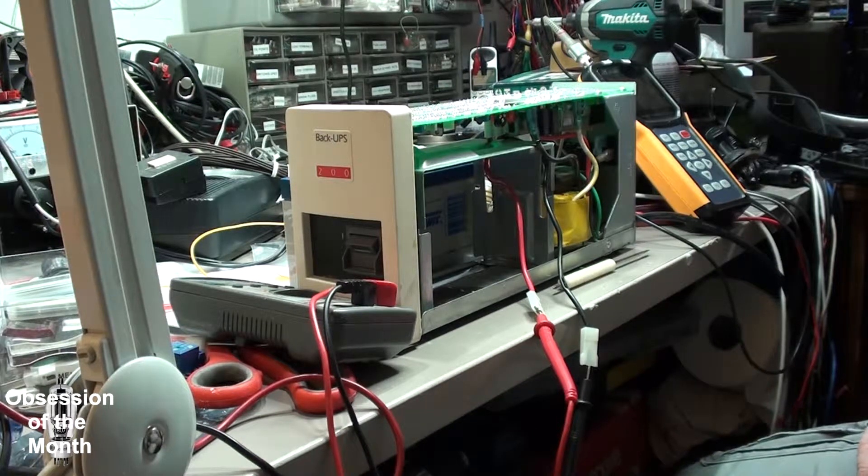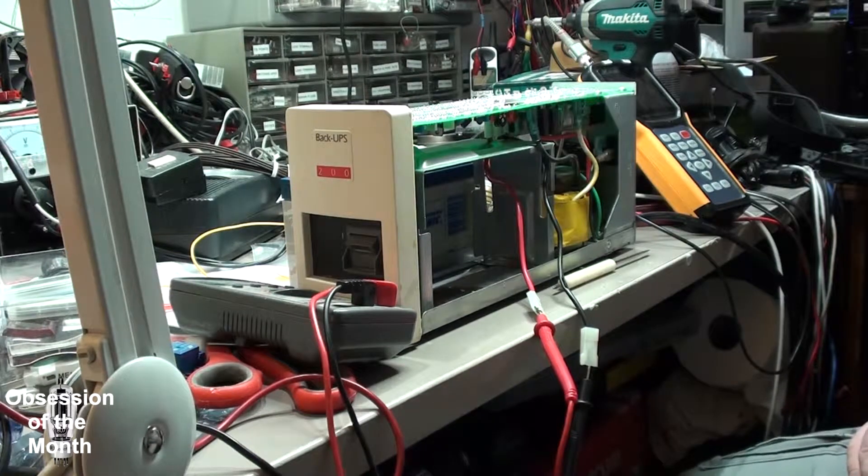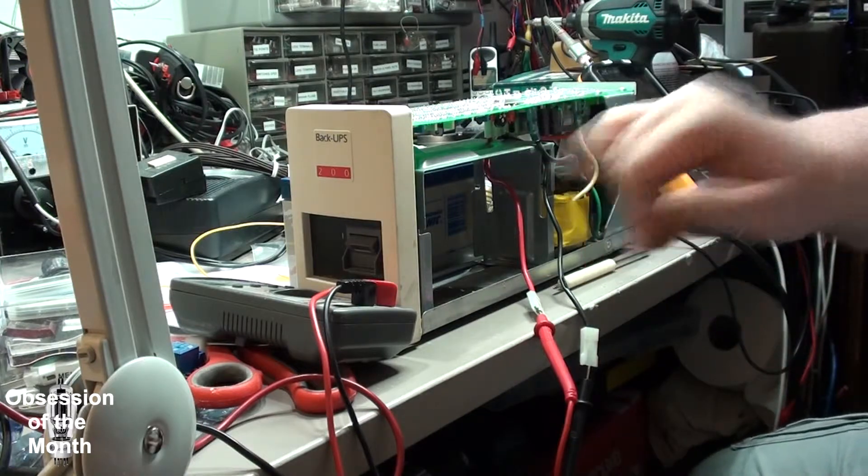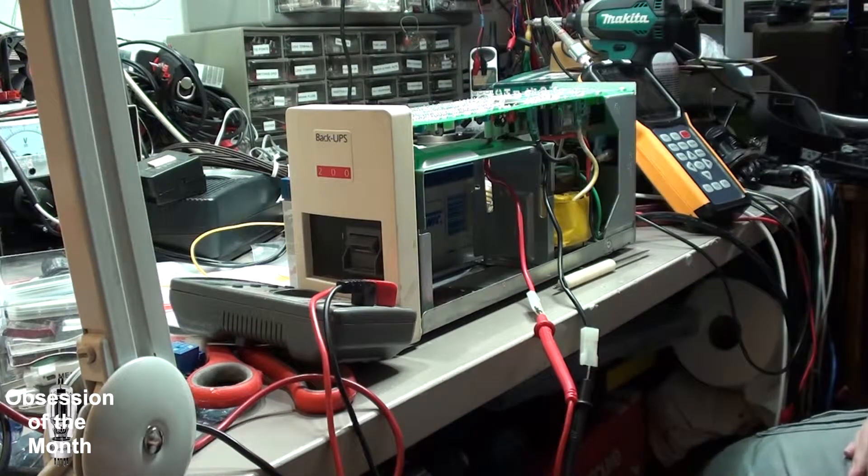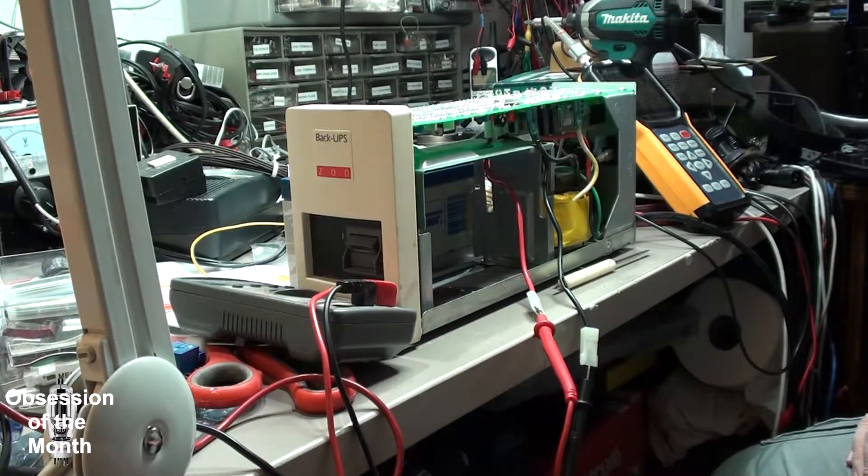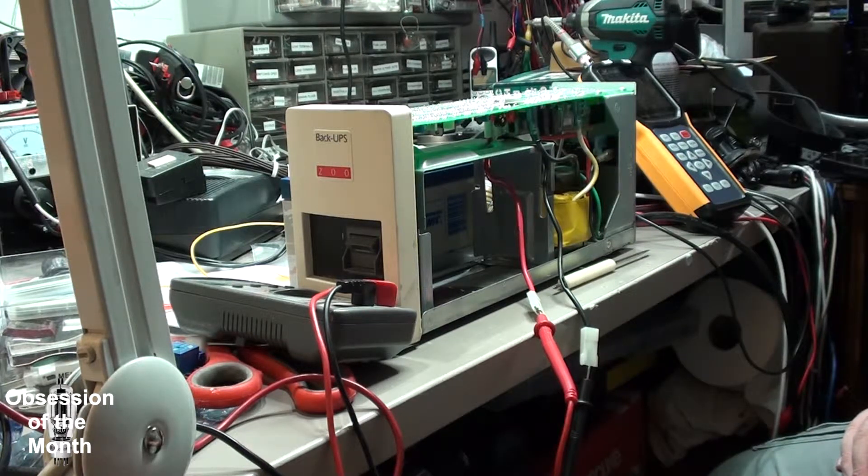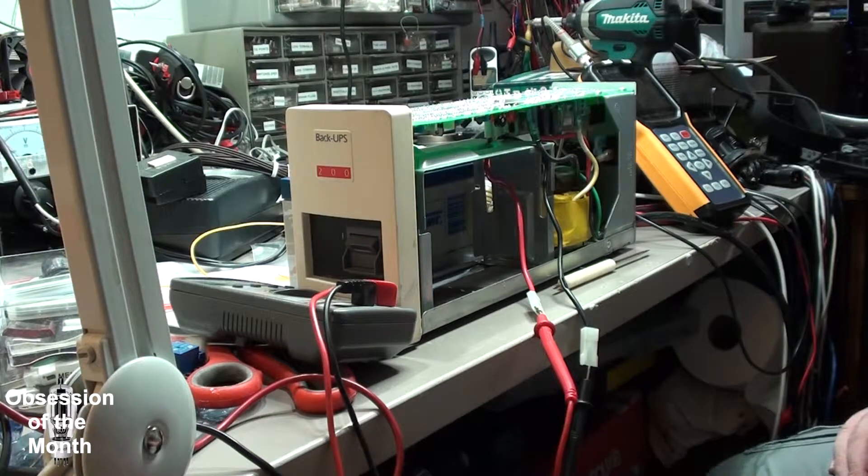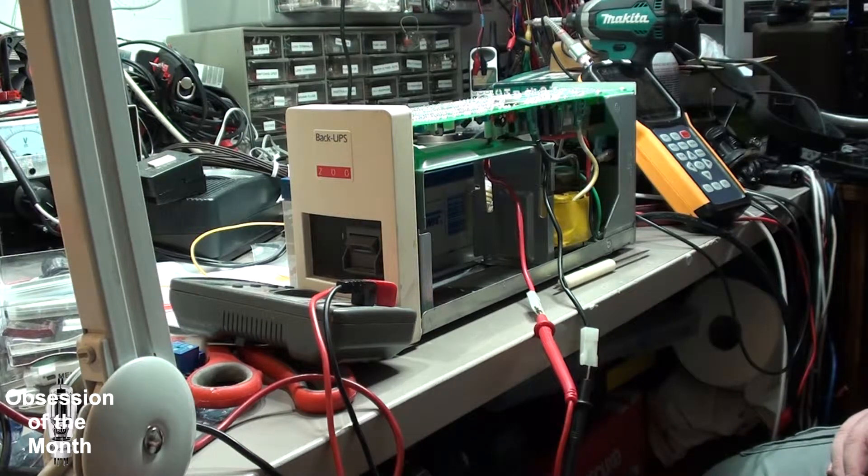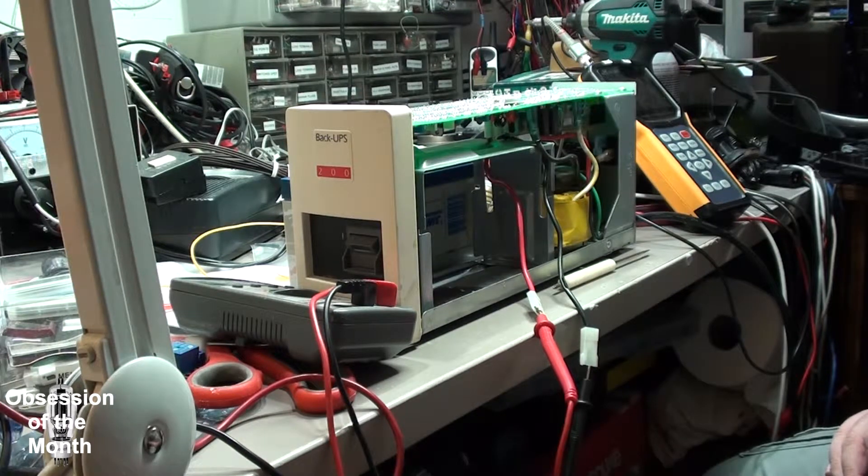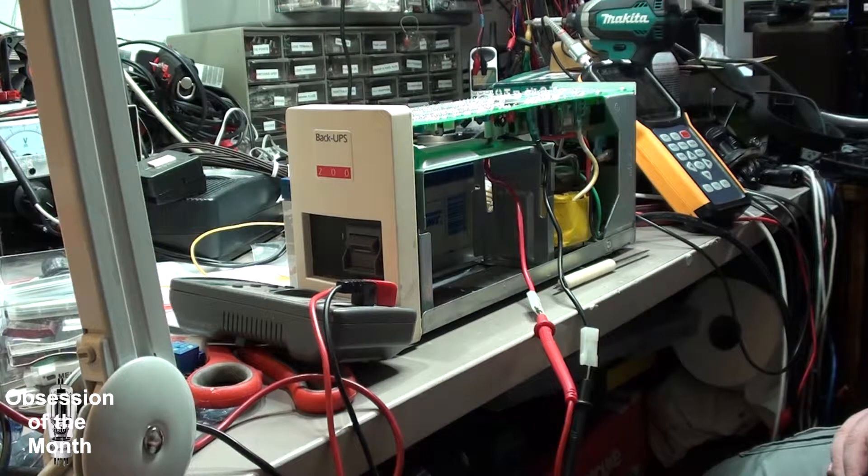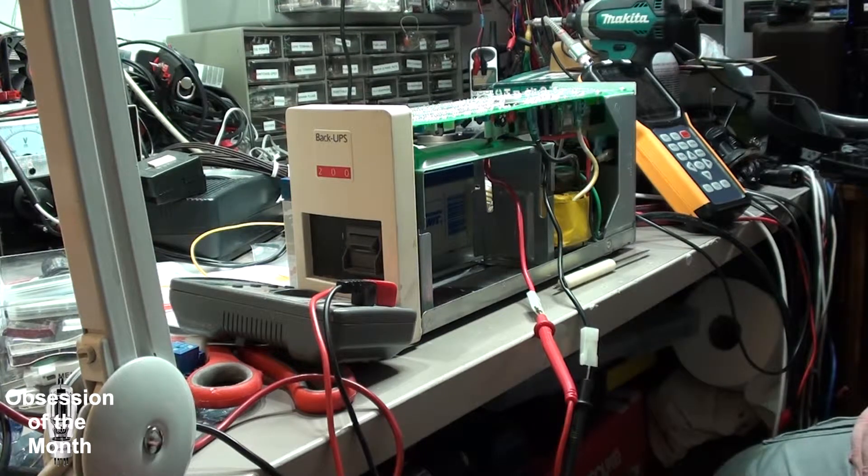This one on this side says battery float, and then there's one marked frequency out, V out, and transfer voltage. So I was surprised to find out that you can adjust certain things about this.